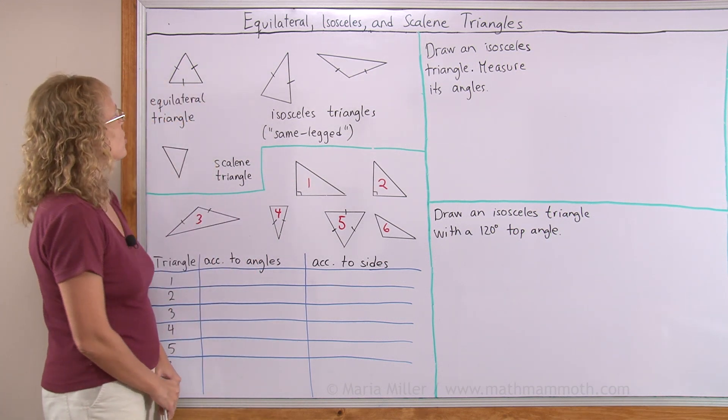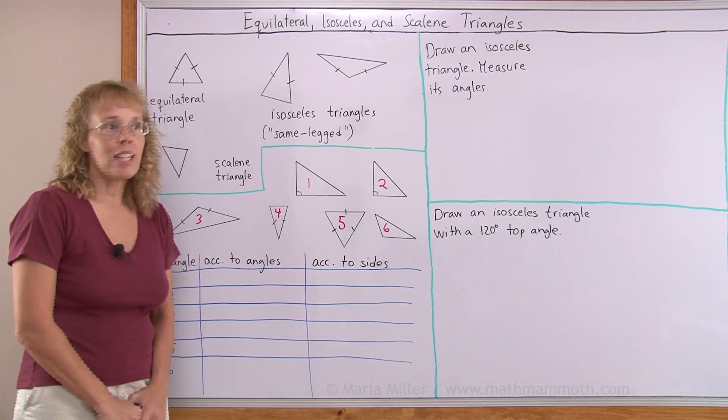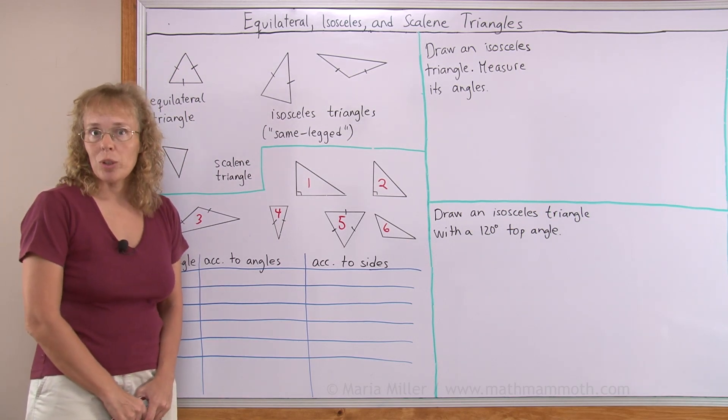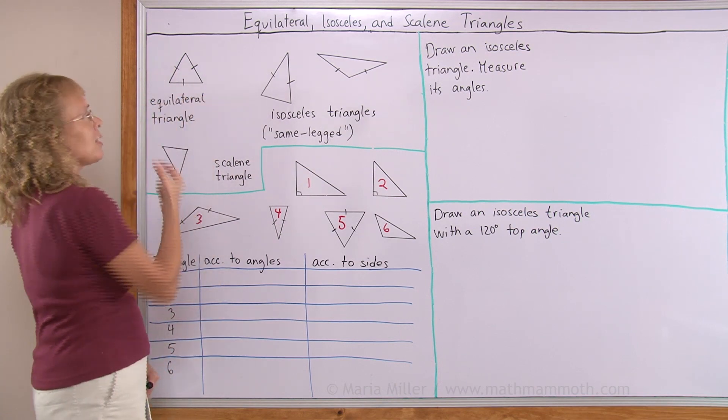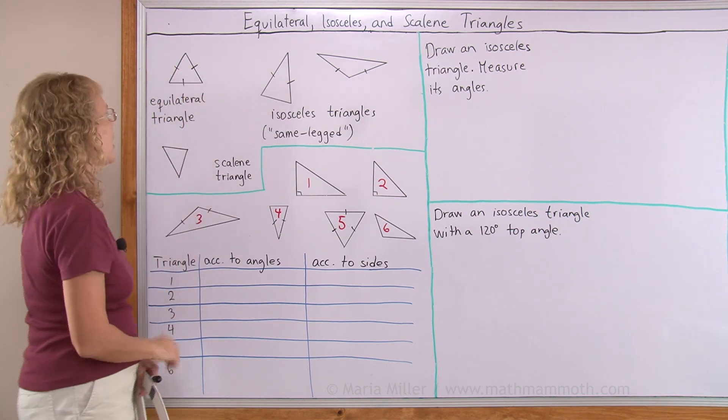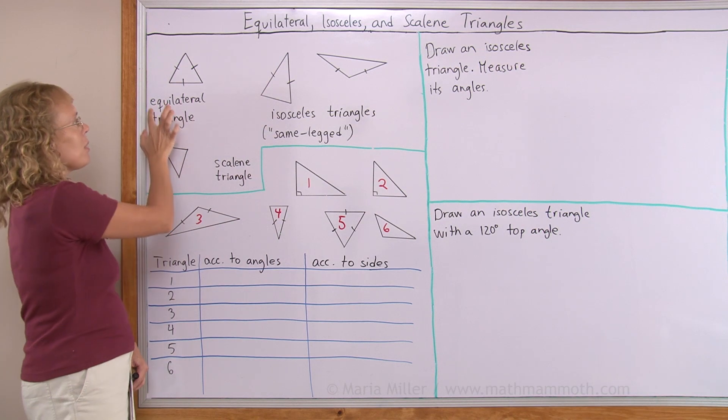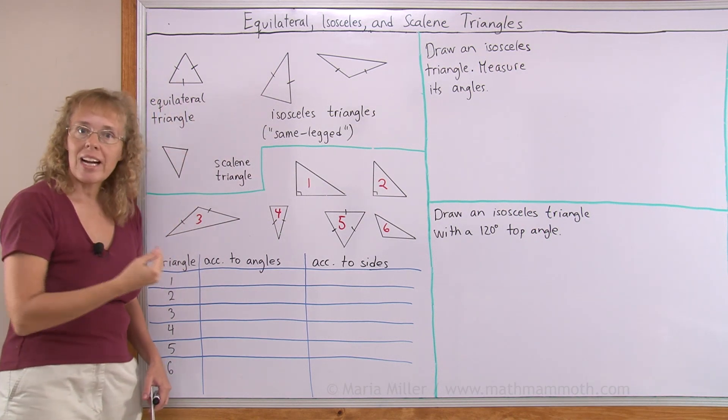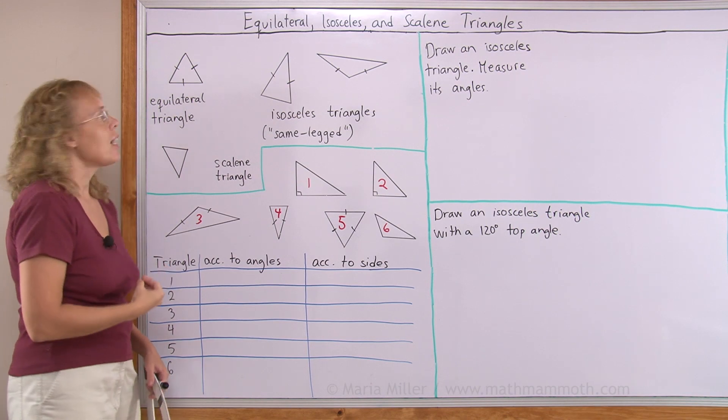First of all, some definitions. What is an equilateral triangle? It's basically a triangle where all three sides are congruent. All three sides measure the same. You can see it in the name: equi, meaning same, and lateral having to do with sides. Same sided triangle.